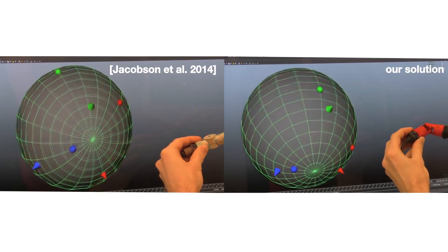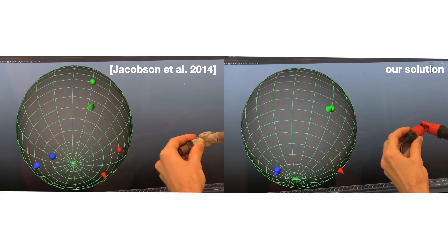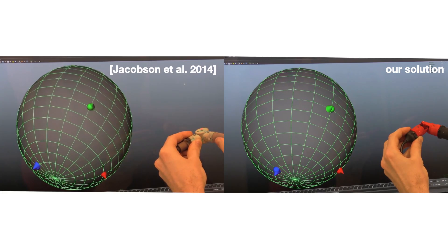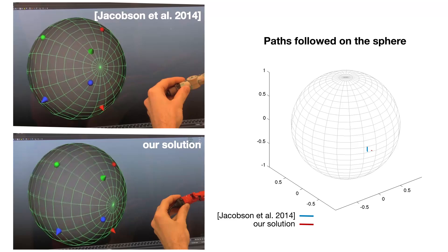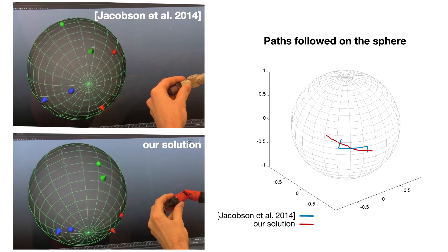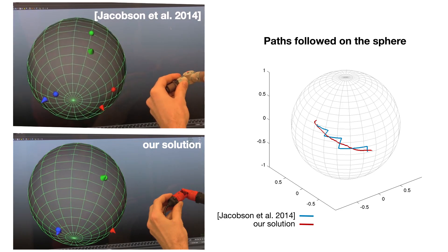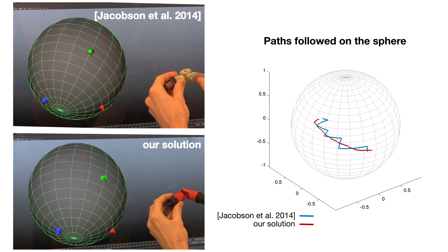In this demo, an experienced user uses ours and the device proposed by Jacobson and colleagues. Our solution supports smooth tracing of spherical geodesics, and hence is superior to the Euler angle parametrization of the competing hardware.